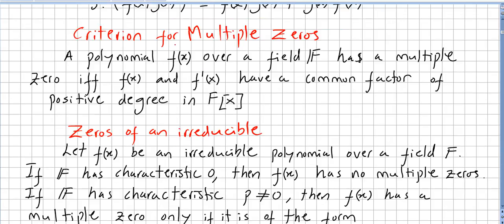To finish this chapter, I'm just going to leave here two concepts. A criterion for multiple zeros: a polynomial f(x) over a field F has a multiple zero if and only if f(x) and its derivative have a common factor of positive degree in the ring of polynomials. That will be called a multiple zero.